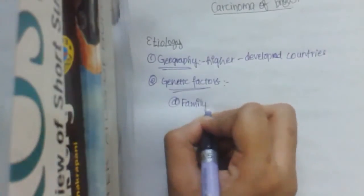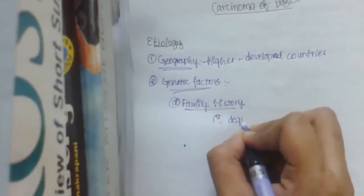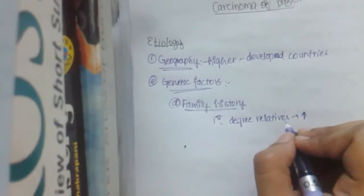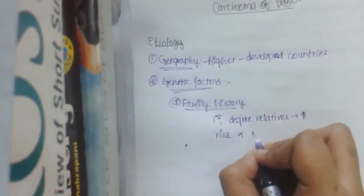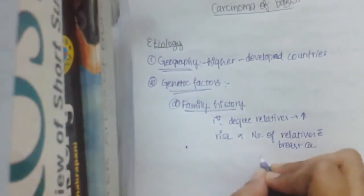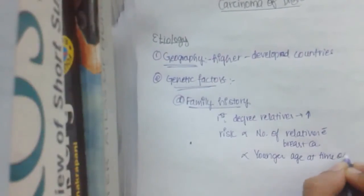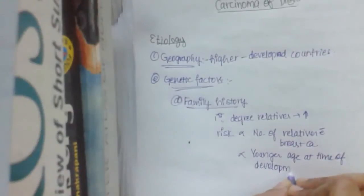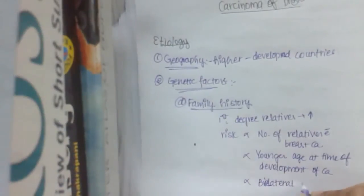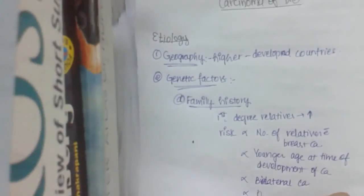They even found out that this breast cancer runs in some families. So the first one is family history. So first-degree relatives have increased risk of breast carcinoma. The risk is also proportionate to number of relatives with breast carcinoma and younger age. And it is also proportionate with younger age at time of development of carcinoma. If many people get bilateral cancers, then there is increased risk.